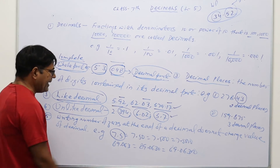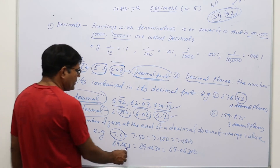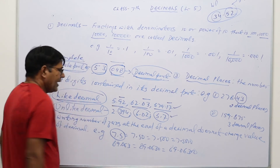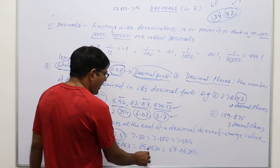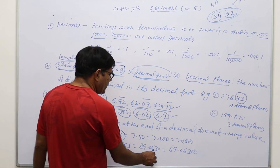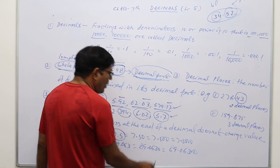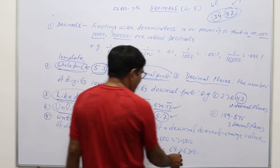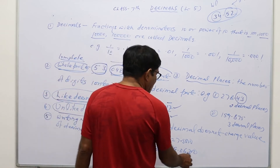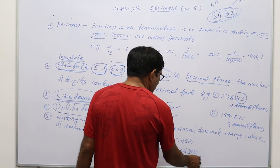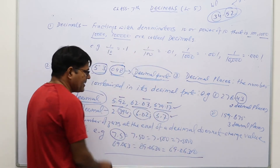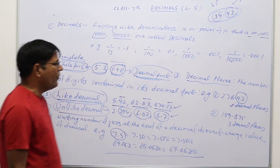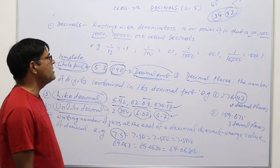Similarly, 89.063, if we write 89.0630 or 89.06300, then these decimals' values will not change.